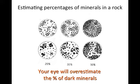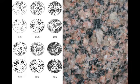I wanted you to see correct percentages because your eye tends to overestimate the percentage of dark minerals. Let's try to do this with a real rock. Here's a rock that you may decide looks like a granite, but it has to have the right percentage of the appropriate minerals before you can name it correctly.